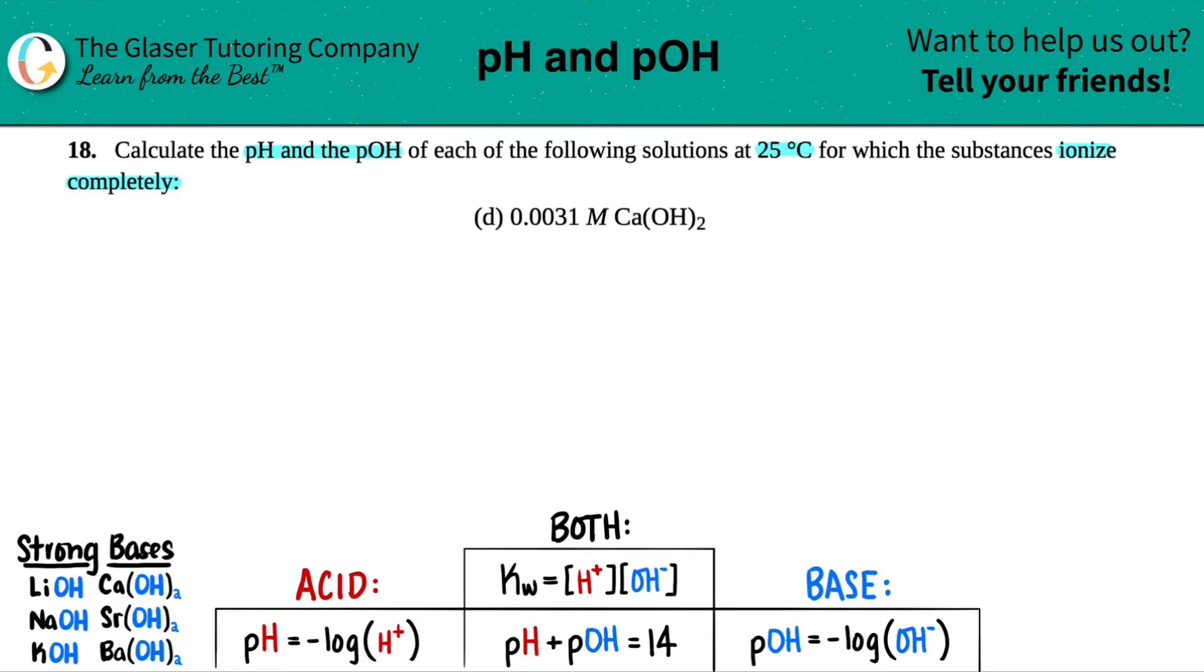Now, they might not give you that little hint on the test or quiz. So we just have to know that Ca(OH), when you see this compound, it should be ringing bells in your mind because this is a strong base. And I wrote down all the strong bases on earth. There's six of them. And Ca(OH)2 falls right into this category. So anytime that you see any one of these six, they will always ionize completely.